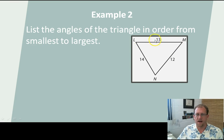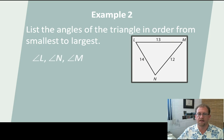So if I have all the side lengths of a triangle, then I can give you the ratio or the relationship between the different angles of that triangle. List the angles of the triangle in order from smallest to largest. This is the smallest side, so angle L will be the smallest angle. This is the next smallest side, so angle N will be the next smallest angle. This is the largest side, so angle M will be the largest angle. So whatever side they're opposite, angle L, angle N, angle M.